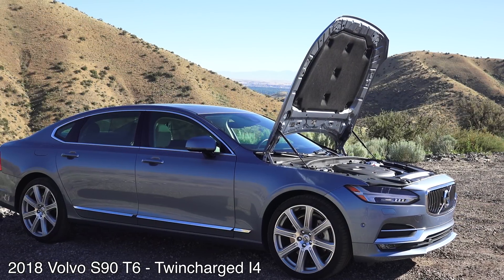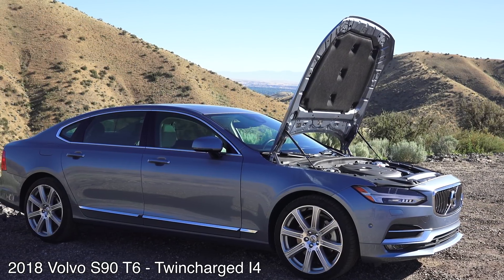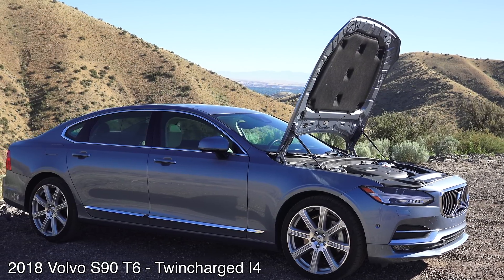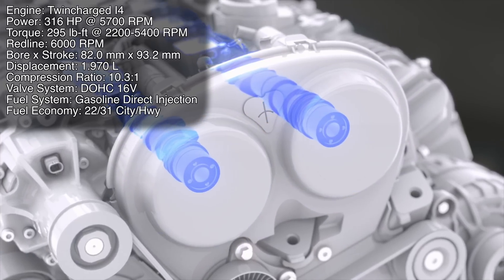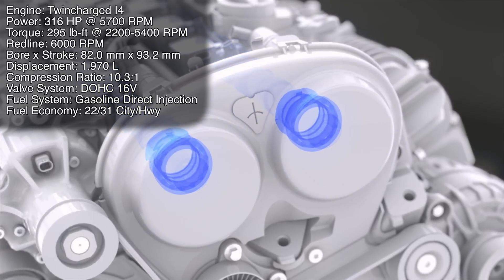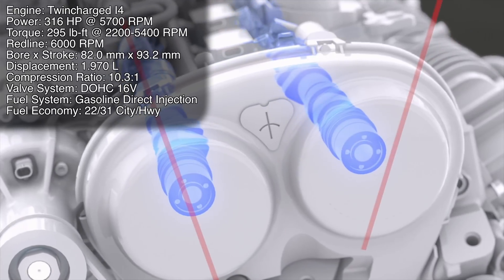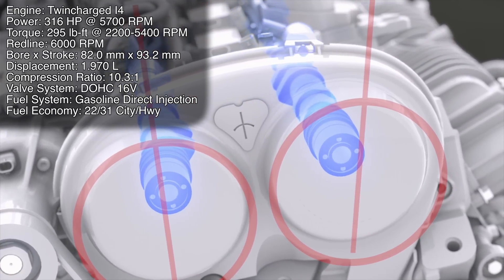The vehicle we are looking at here is the 2018 Volvo S90 T6 all-wheel drive inscription. Its 2.0-liter twin-charged engine produces 316 horsepower at 5,700 rpm and 295 pound-feet of torque from 2200 rpm all the way to 5,400 rpm.